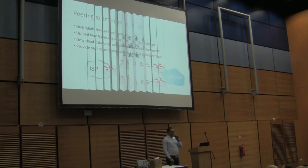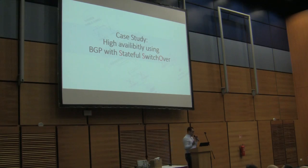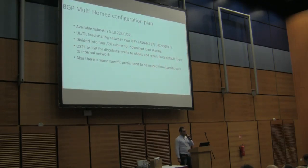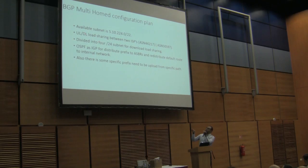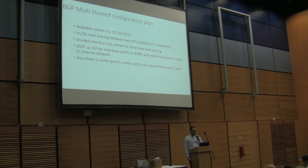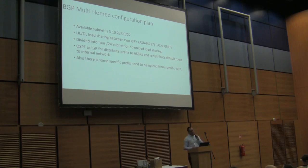We'll go through a case study with a simple network scenario: how to achieve stateful switchover within our BGP configuration using MikroTik. In our test, we have a /22 subnet. We need upload and download sharing. We'll divide the subnet into /24s and have a supernet for advertising the whole network. We'll use OSPF as our IGP and distribute prefixes to the ASBRs externally. From the ASBRs, OSPF routes will be redistributed to the internet or enterprise. We also have specific prefixes to be uploaded from a specific path using a routing mark.